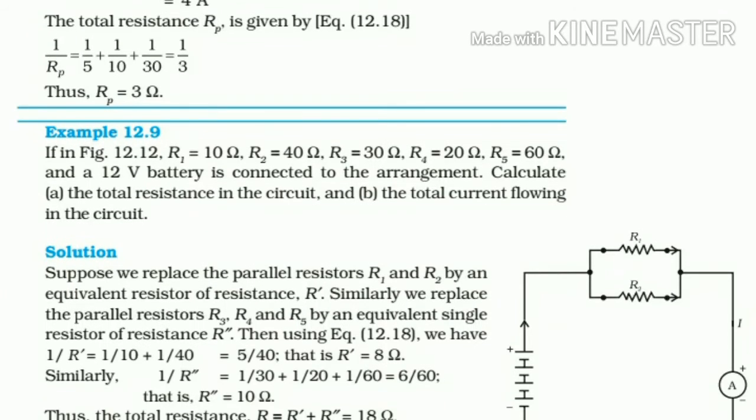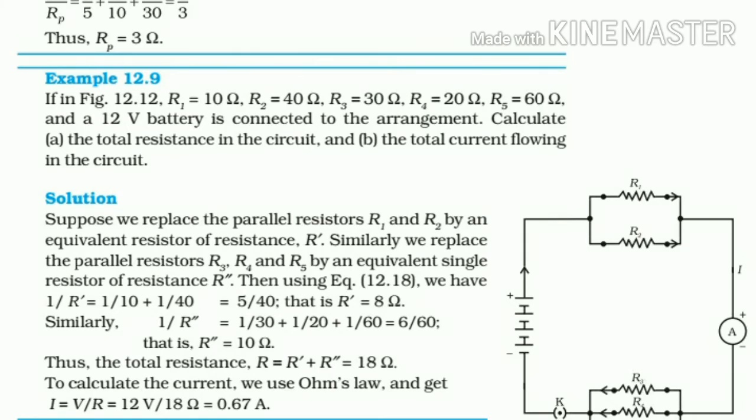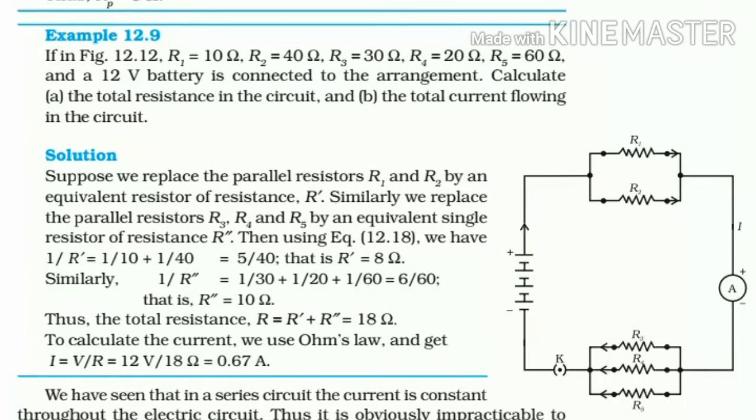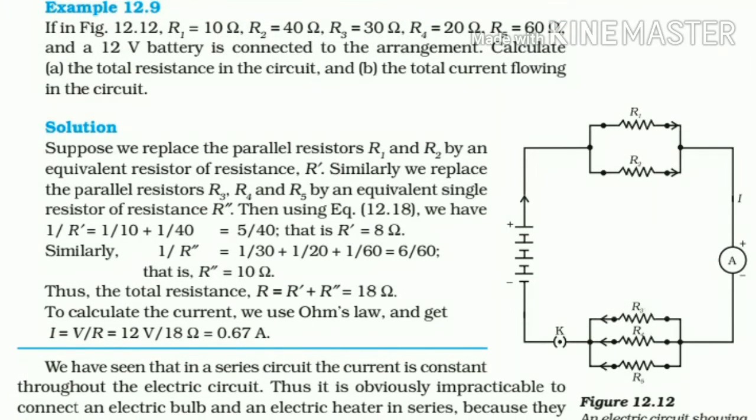In figure 12.12, R1 is 10 ohm, R2 is 40 ohm, R3 is 30 ohm, R4 is 20 ohm, R5 is 60 ohm. The five resistances are in parallel combination.